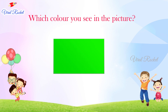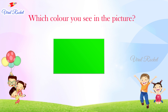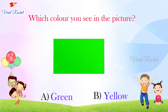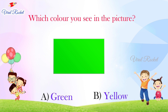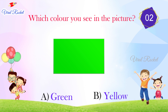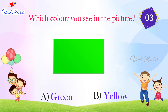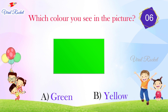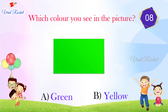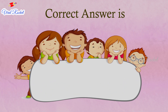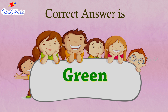Which color do you see in the picture? The options are: A. Green, B. Yellow. The correct answer is A. Green.